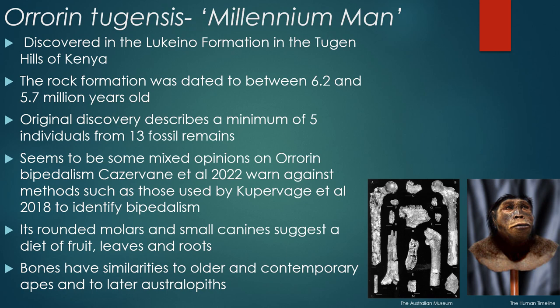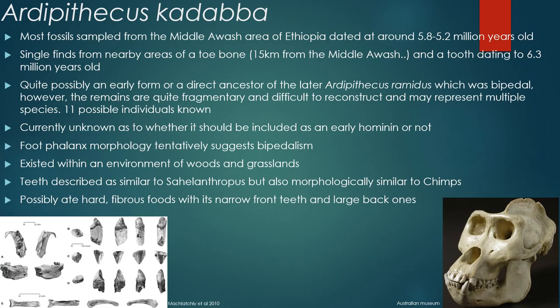The bones show similarities to both older contemporary apes and to later australopiths, making it a possible contender for an ancestor. Our third and final species is Ardipithecus kadabba. Most fossils have been found in the Middle Awash area of Ethiopia, dated to around 5.8 to 5.2 million years ago. There are also single finds from nearby areas, including a toe bone and a tooth dated to 6.3 million years old. This may be an early form or direct ancestor of the later Ardipithecus ramidus. However, the remains are very fragmentary and may represent multiple different species.